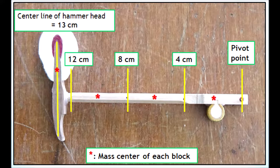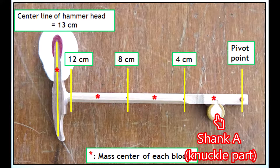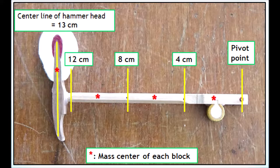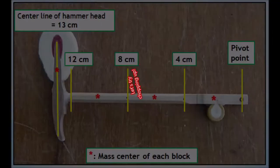These star marks are mass centers of each block. First, shank A is the knuckle part. Second, shank B is here. Third, shank C is here. And last, the hammerhead is here.